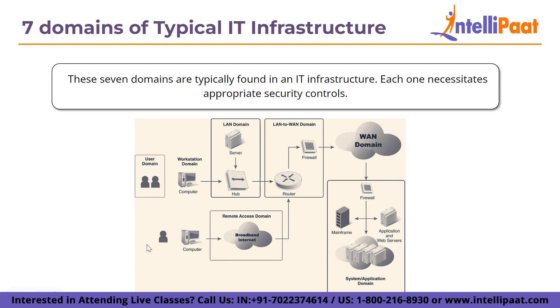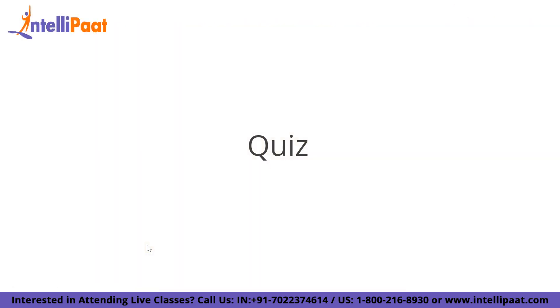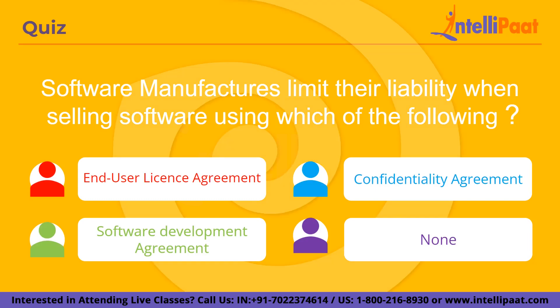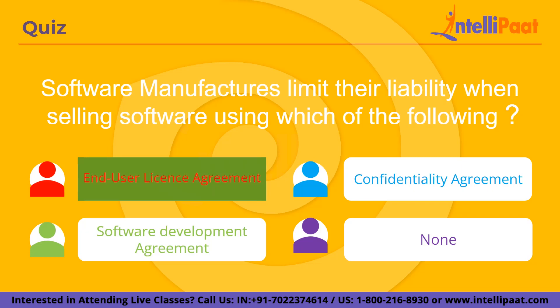Now let's have some quiz discussions about the things we have covered. Our first question: software manufacturers limit their liability when selling software using which of the following? Options are: end user license agreement, confidentiality agreement, software development agreement, and none. The correct answer is end user license agreement. An end user license agreement is a legally binding contract between the owner of a product — often software — and the end user; more specifically, a contract between a product's licensor and the licensee.